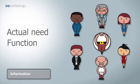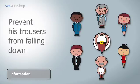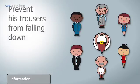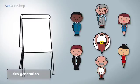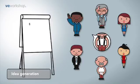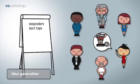The answer to this question is: prevent his trousers from falling down. In the next phase of the workshop — idea generation — the team will focus on generating ideas to solve Johnny's basic needs. Are there better, cheaper ways to hold up Johnny's trousers instead of the proposed belt?